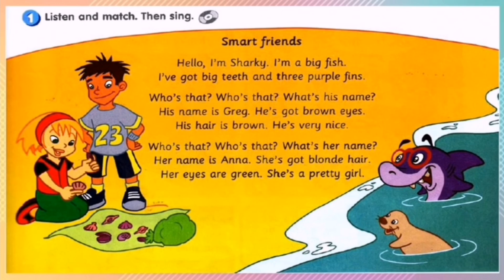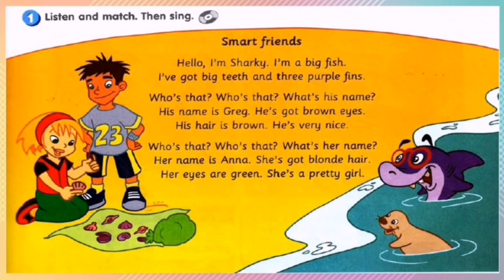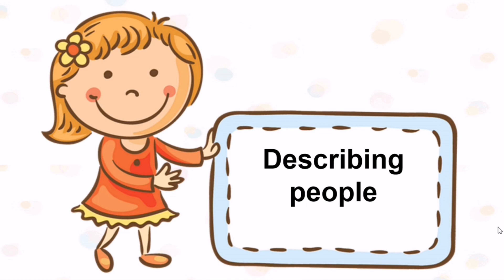Listen and match, then sing the song. Hello, I'm Sharky. I'm a big fish. I've got big teeth and three purple fins. Who's that? What's his name? His name is Greg. He's got brown eyes. His hair is brown. He's very nice. Who's that? What's her name? Her name is Anna. She's got blonde hair. Her eyes are green. She's a pretty girl.